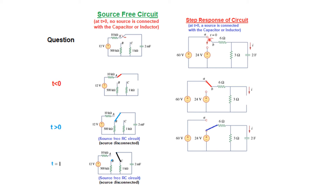In this example, the switch is connected to A and moves to B at t = 0. Before t = 0, the battery charges the capacitor and it behaves like an open circuit. After t = 0, the switch moves to position B. At t > 0, the energy storage device is still connected with the power source or battery. Therefore, this circuit is with source — not without source — and so this is a step response RC circuit.